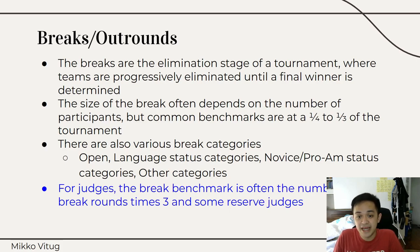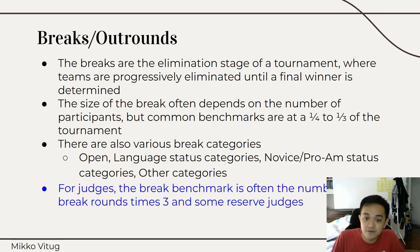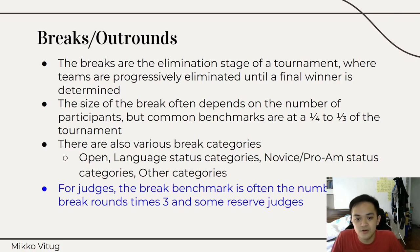There are also various break categories. Maybe you'll get the top 32 teams or the top 48 teams. But you can also get them from specific categories. You can have the open break, which is everybody in the tournament, or you can have specific language status category breaks — for example, the top 16 teams that have English as a second language or English as a foreign language. You have novice and pro-am status breaks — a break only for teams that have never broken in a major tournament or are doing their first tournament — and other categories as well.